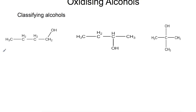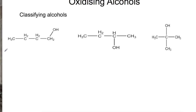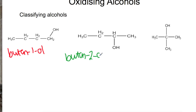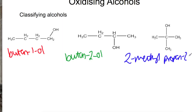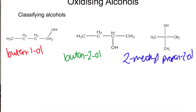So here we have three alcohols. This one here is butan-1-ol. In the middle we have butan-2-ol. And at the right hand side here we have 2-methyl-propan-2-ol. If you're unsure on how to name branched chain alcohols then I recommend that you check out the video on branched chain alcohols after you've watched this.